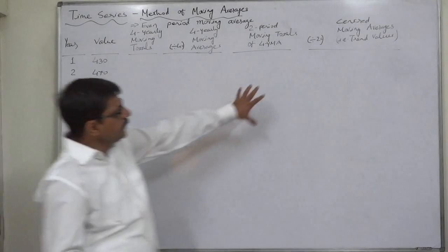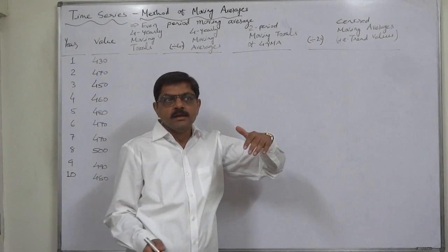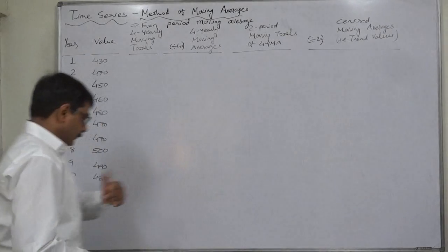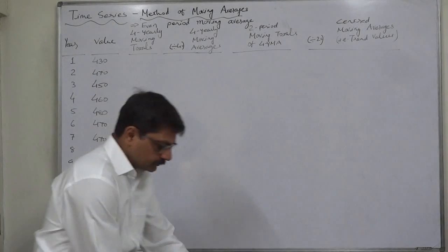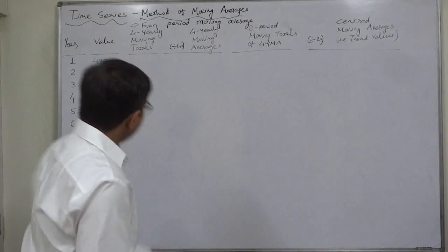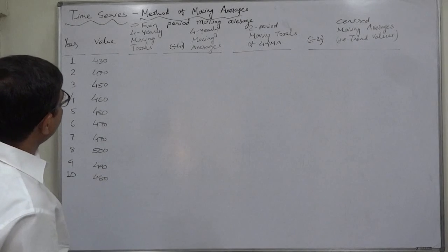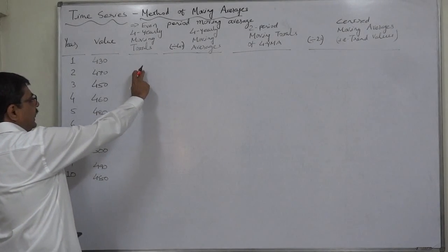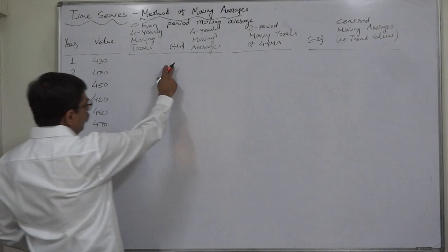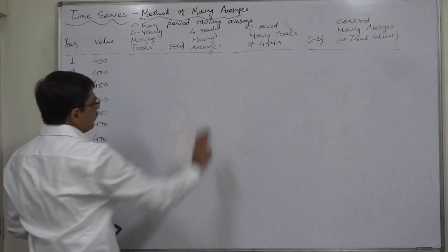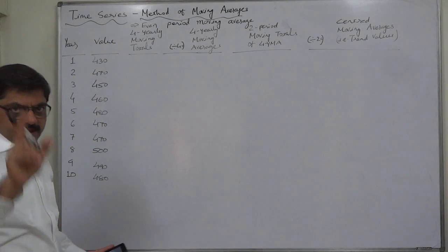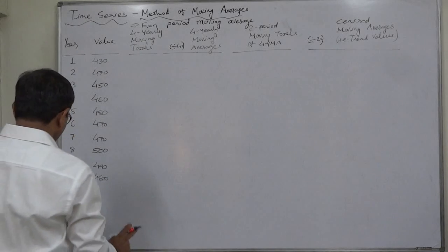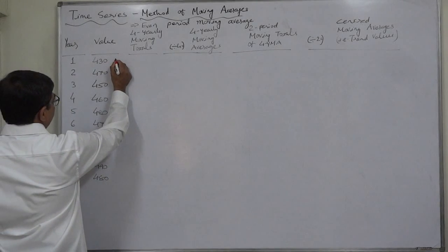Because of a special reason we have to go through a double step. The first column we need to prepare is the four-yearly moving totals, and then we divide by four, and the result will be the four-yearly moving averages. But that will not be the final answer as standard trend values.